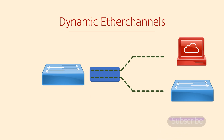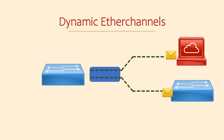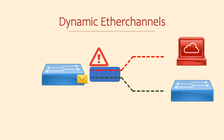This would result in traffic being dropped. However, if it's dynamic, the switches continually share messages with each other. If these are disrupted in some way, the switch will know there's a problem and will shut down the miscabled link. So, dynamic is good.